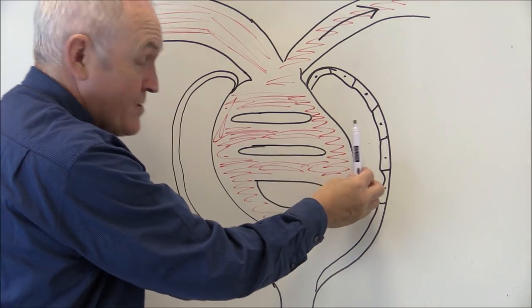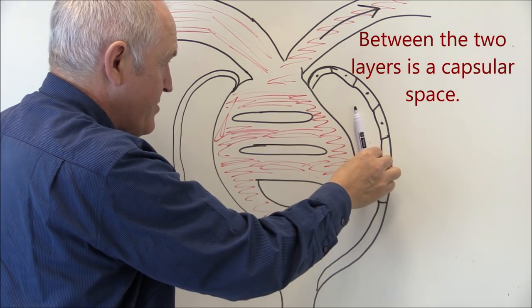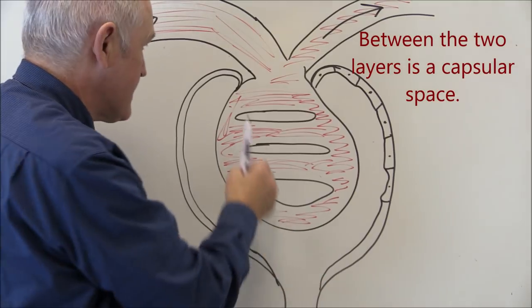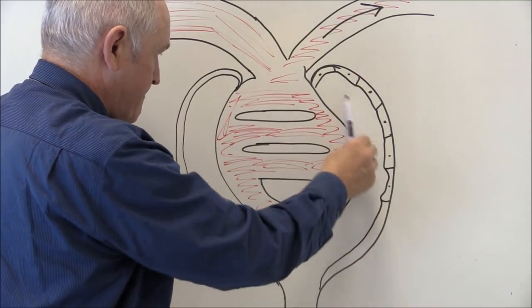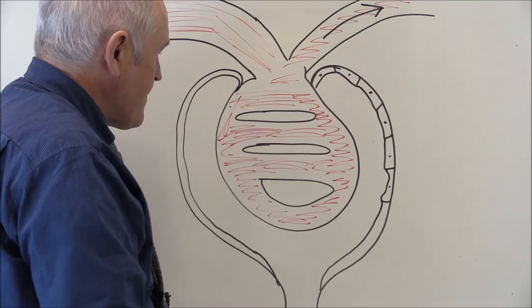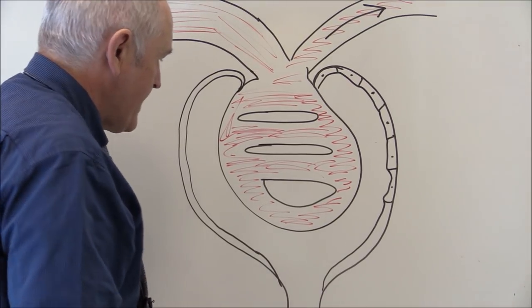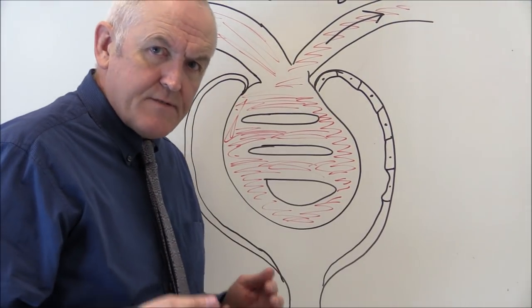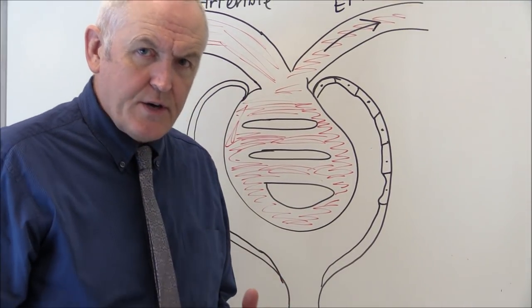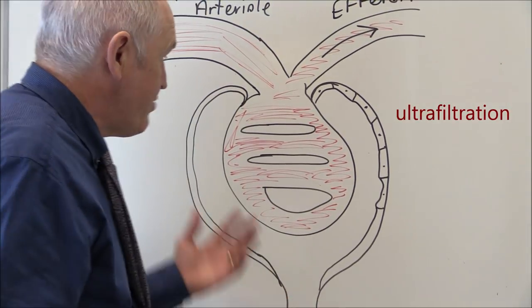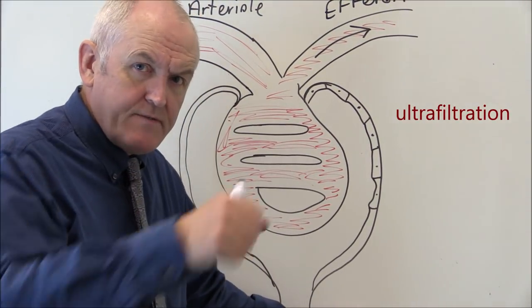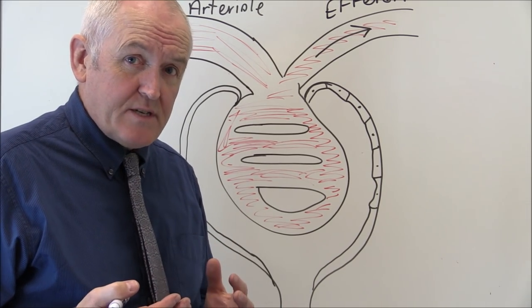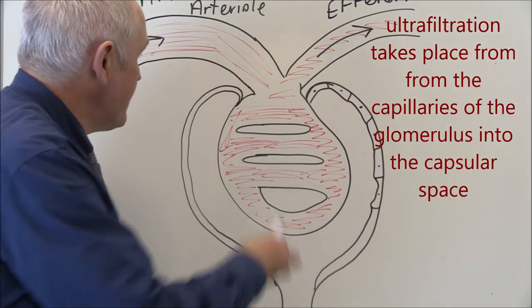The space between the capillaries and Bowman's capsule is Bowman's space, or the capsular space. What's going on here is the process of ultrafiltration. It's filtration on a microscopic scale — in principle exactly the same as sieving peas in your kitchen, just happening microscopically.